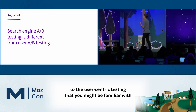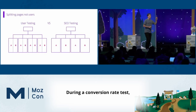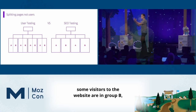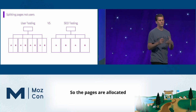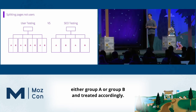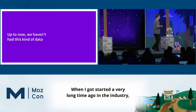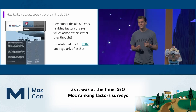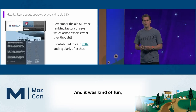This is different from the user-centric testing you might know from conversion rate optimization. During a conversion rate test, you put users into buckets — some visitors are in group A, some in group B, and they get a different experience. In an SEO test, it's the pages that are put into those two groups. Up to now, we just haven't had this kind of data, just like in the NBA 20 years ago. When I got started, I used to contribute to things like the SEOmoz ranking factor surveys — asking me and a bunch of other people what we thought worked and didn't. Kind of fun, but no idea if it was right or not.